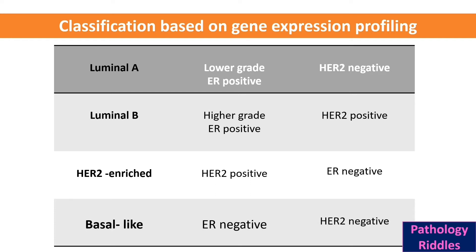The third classification is based on gene expression profiling, checking mRNA levels to determine gene expression. There are four categories: Luminal A — lower histological grade, ER positive, HER2 negative; Luminal B — higher histological grade, ER positive, HER2 positive; HER2 enriched — majority of cells HER2 positive, ER negative; and Basal-like — named because it resembles myoepithelial cells forming the basal layer in ducts — ER negative and HER2 negative.